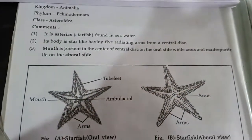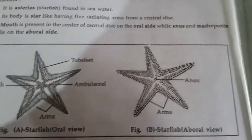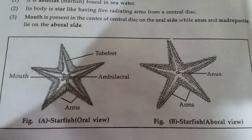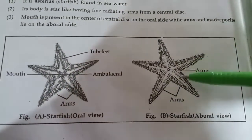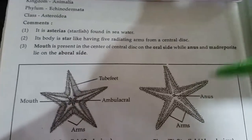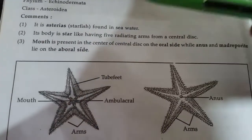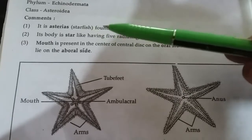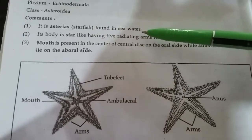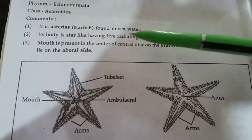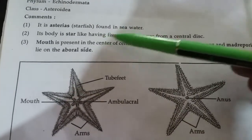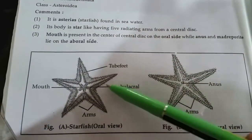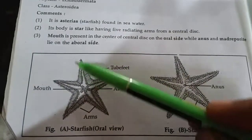This is Starfish. In the diagram of the Starfish, you can see the different parts. Let's look at the features of the Starfish. It is Asteroidea. Starfish is found in seawater in the ocean. Its body is star-like, having five radiating arms from its central disc.